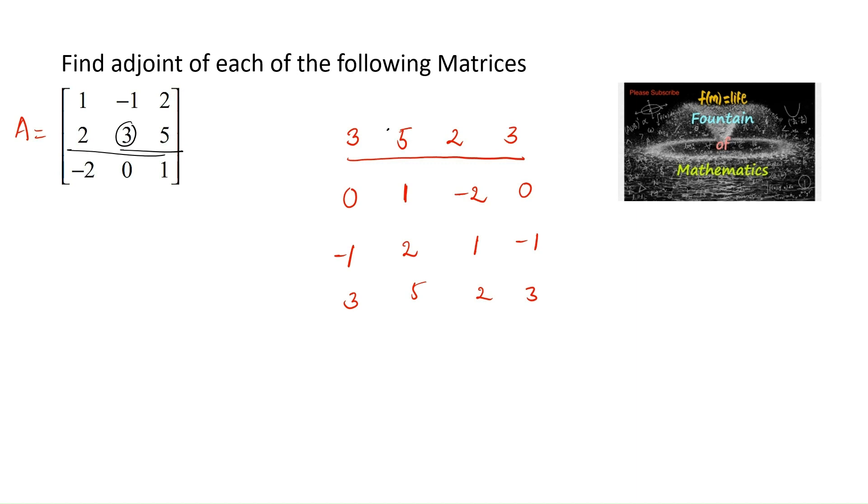Now let's find the determinants. 3 times 1 minus 5 times 0, so 3 minus 0 is 3. This is the cofactor matrix.